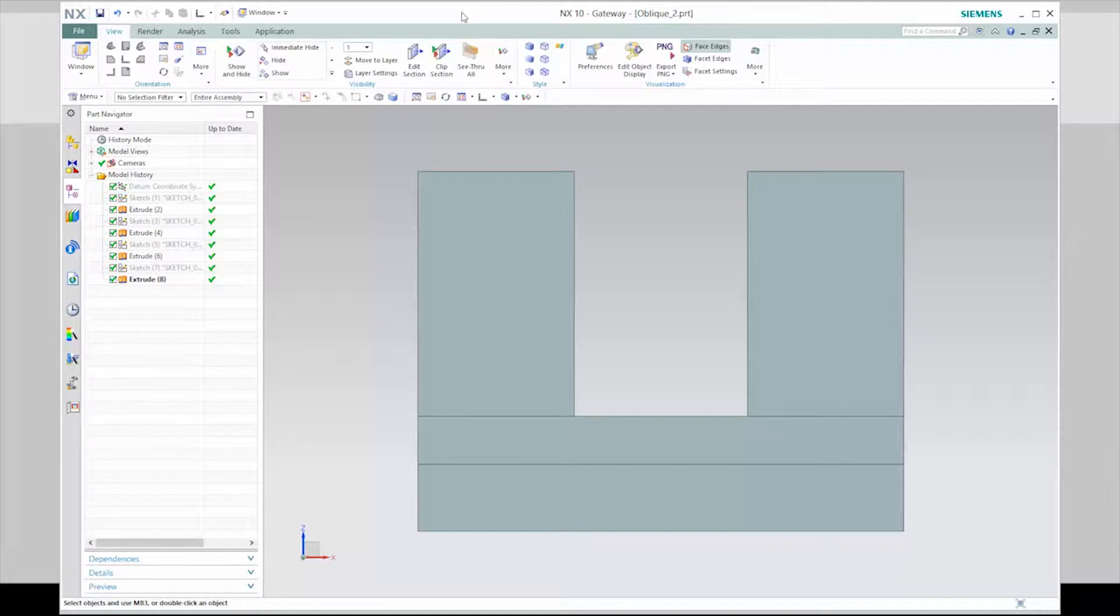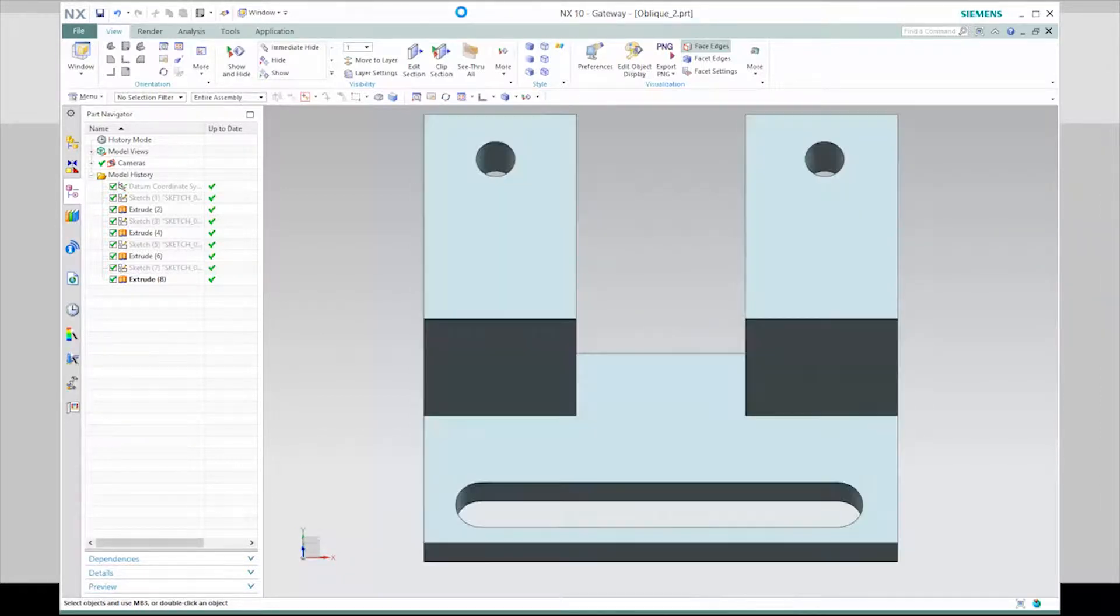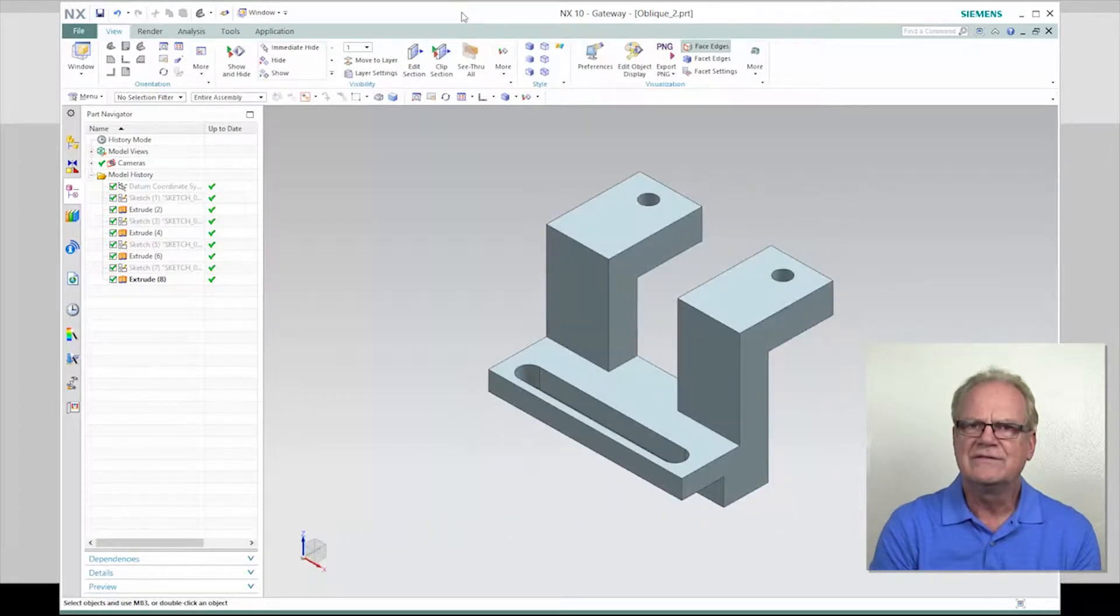Here is the object's front view. Here is the object's top view. Here is its right side view. Asking the Siemens NX system to show its isometric view, the part looks like this. Let's begin our sketch tutorial.